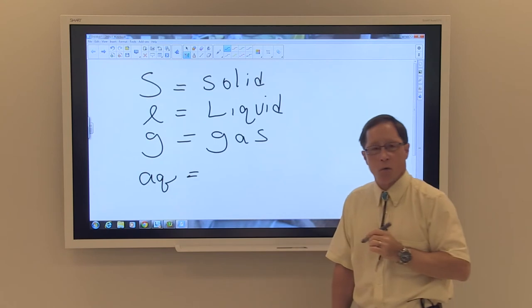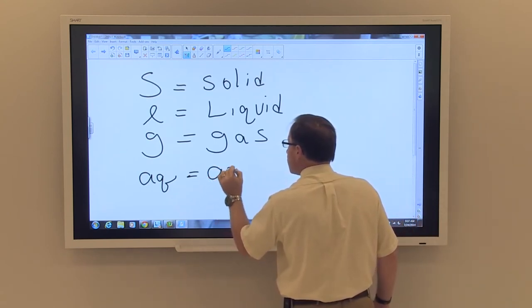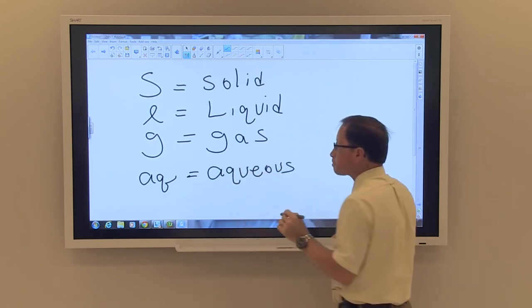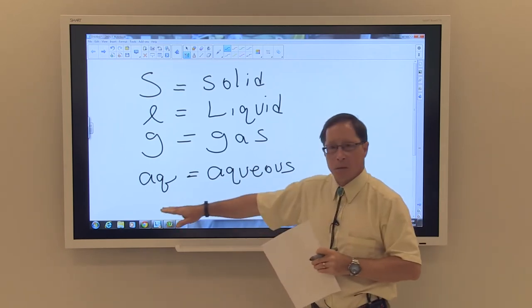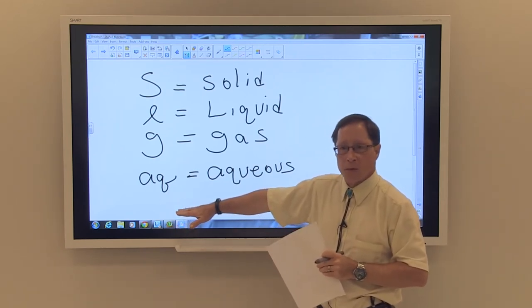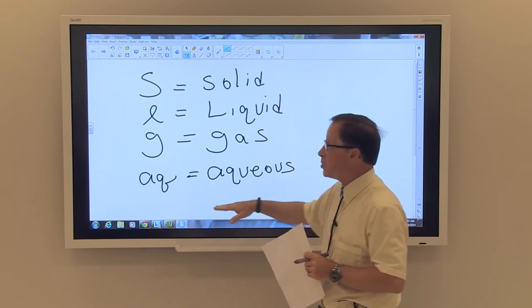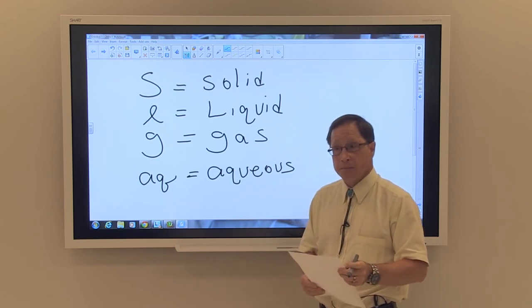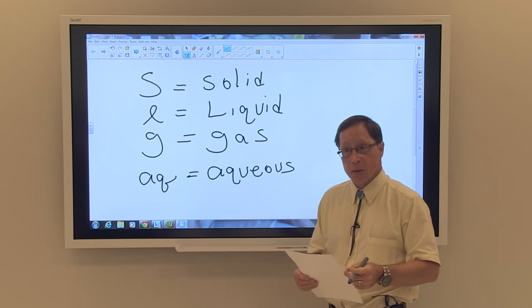AQ is for aqueous. Aqueous means that the chemicals are dissolved in water. They're in a solution with water as the solvent. And it's important to know the states of the reaction because that can affect things as well.